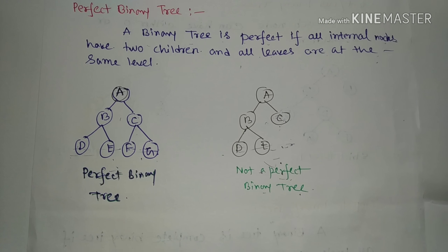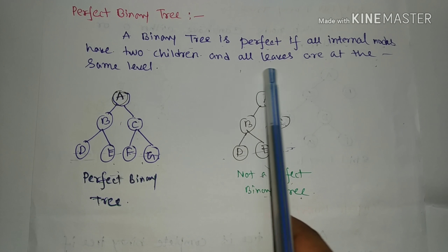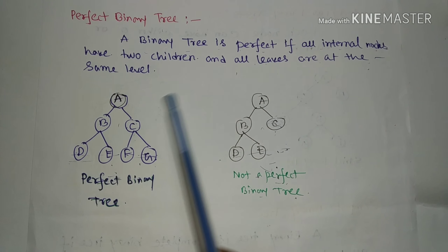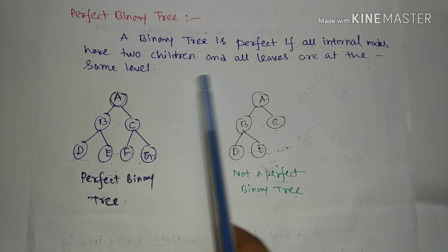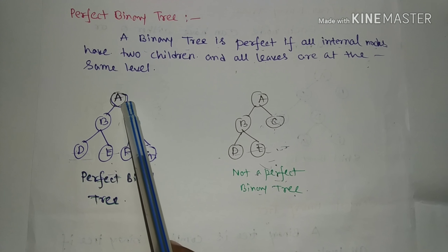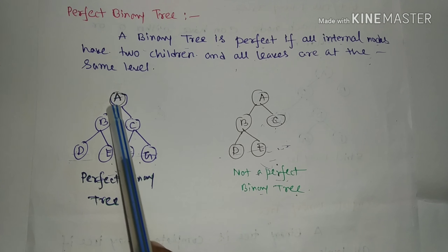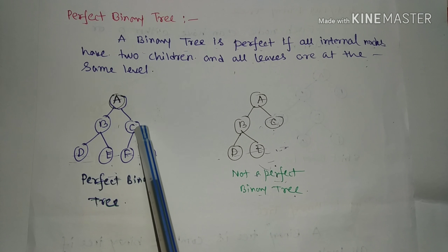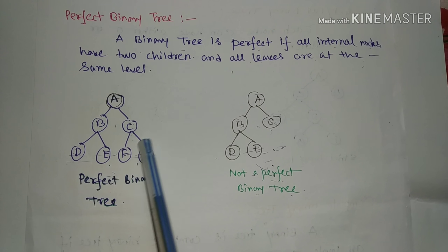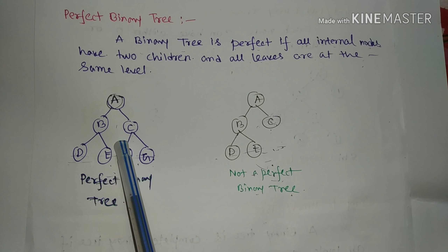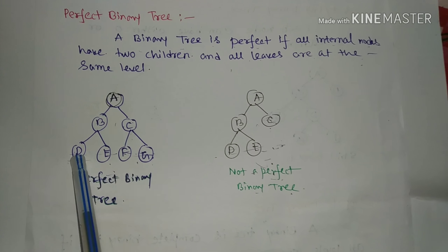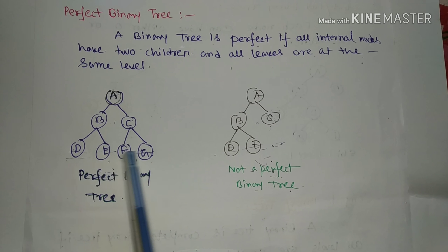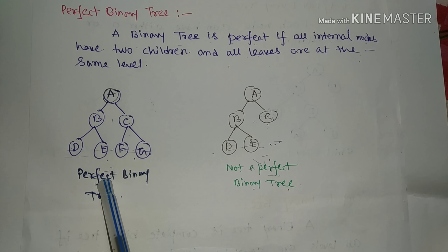So what is a perfect binary tree? A binary tree is perfect if all internal nodes have two children and all leaf nodes are at the same level. In this tree, all internal nodes have two children — A has two children, B has two children, C has two children — and all leaf nodes are at the same level. So it is a perfect binary tree.